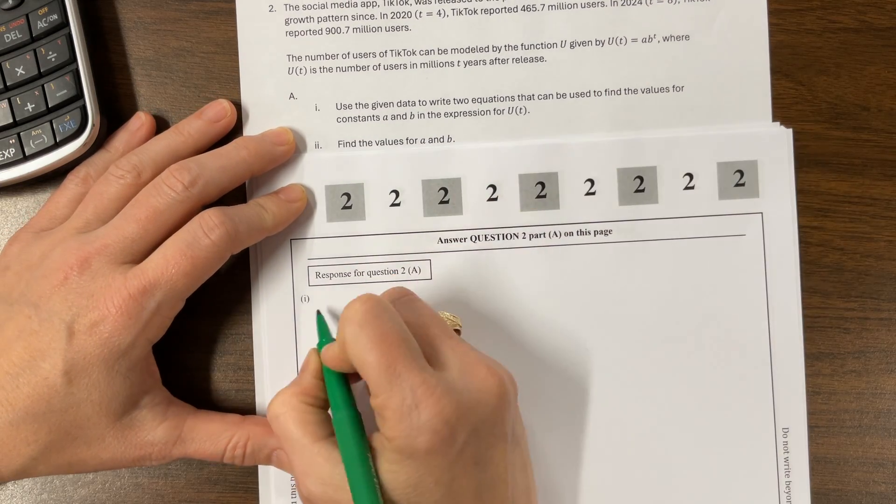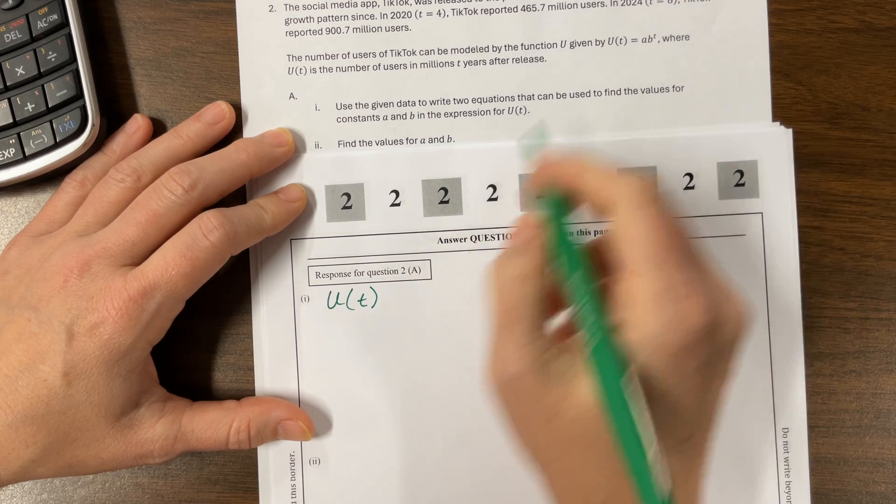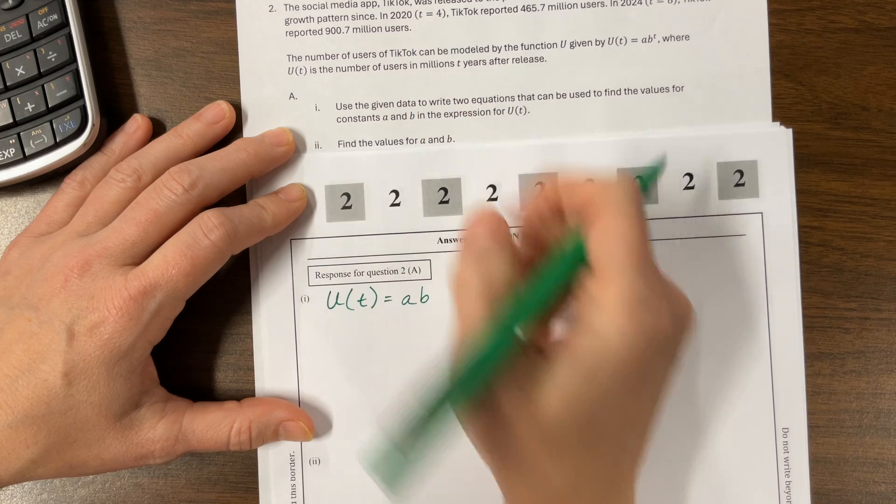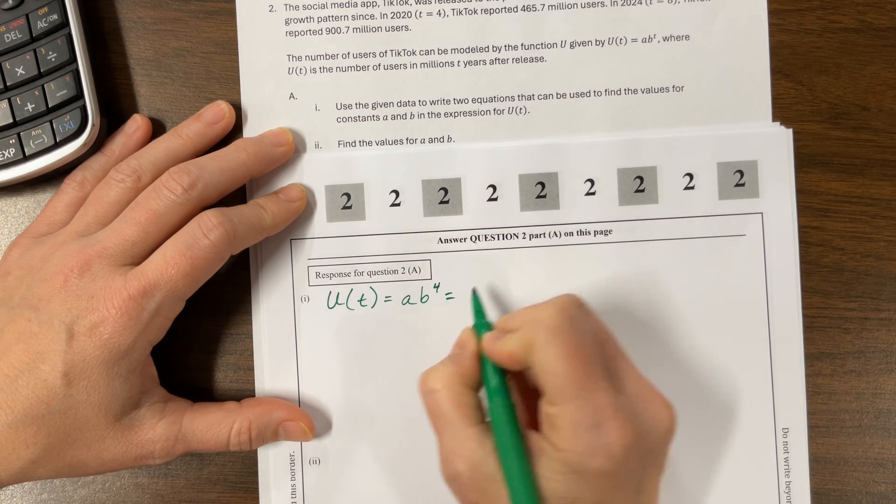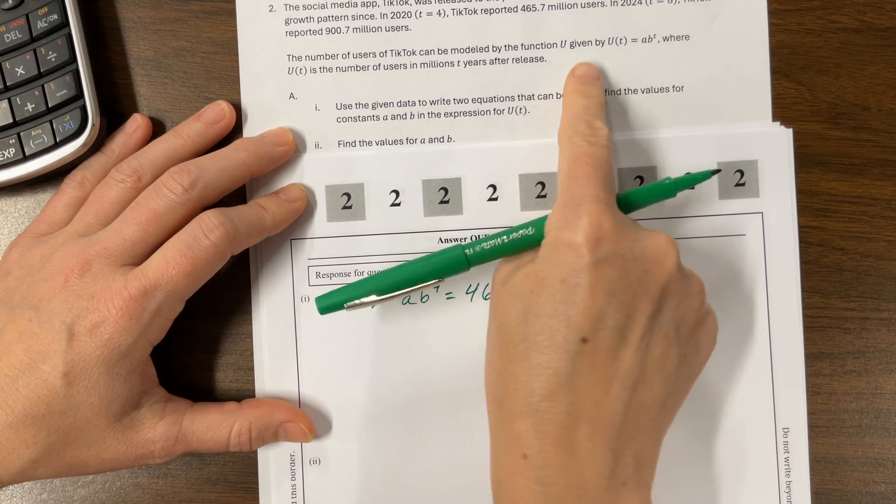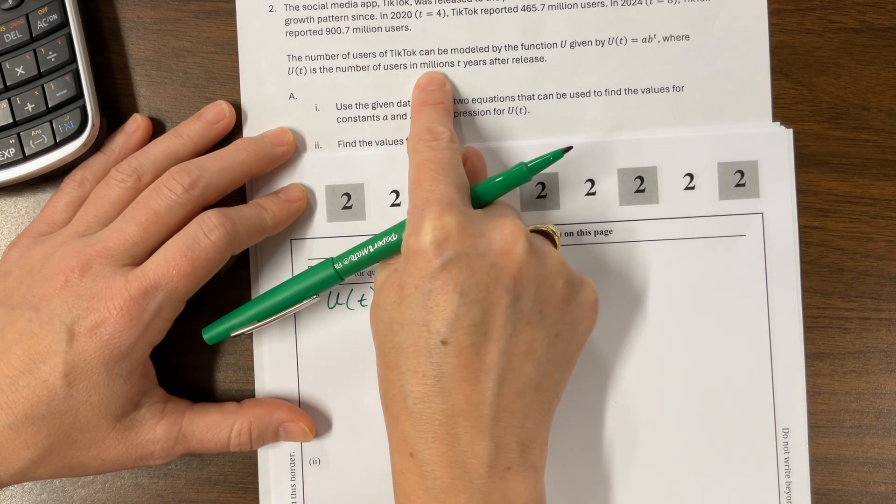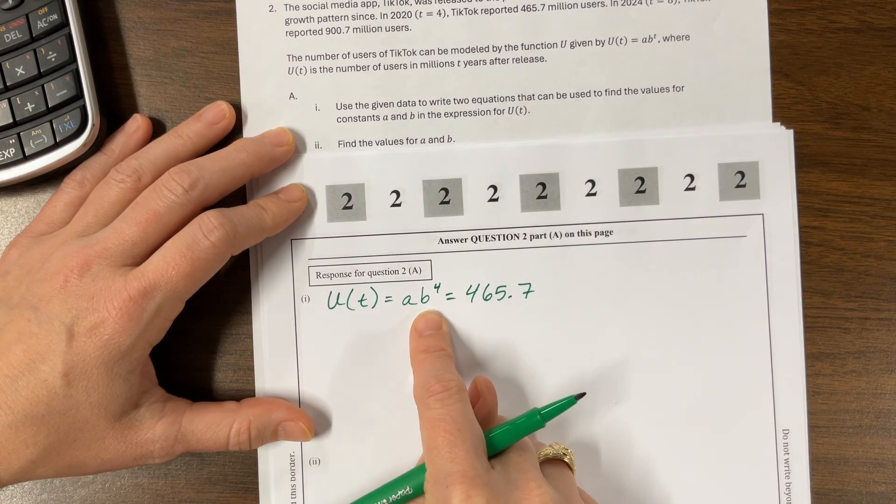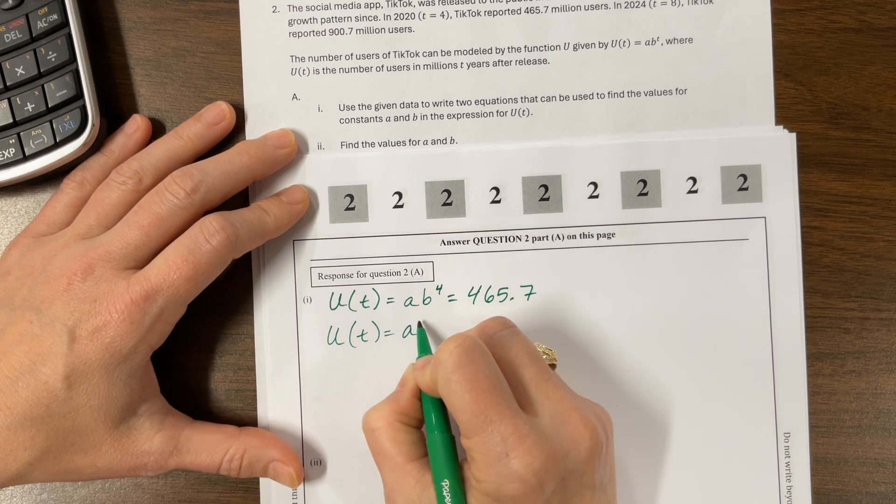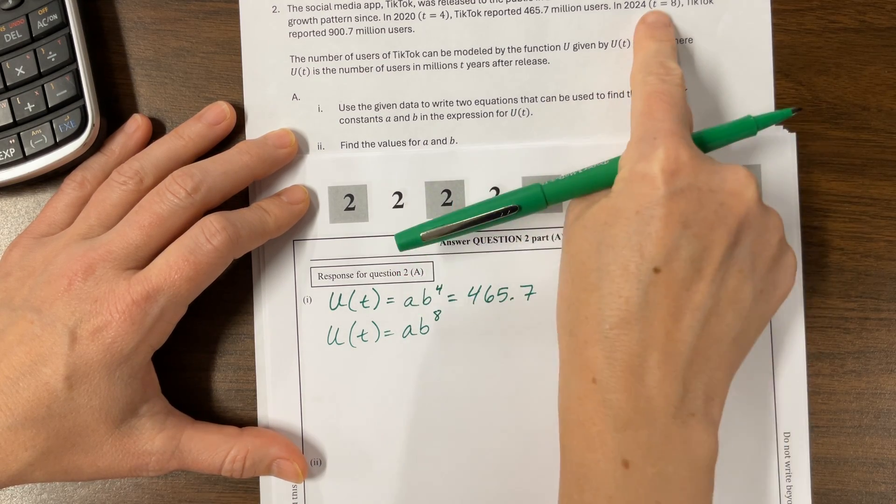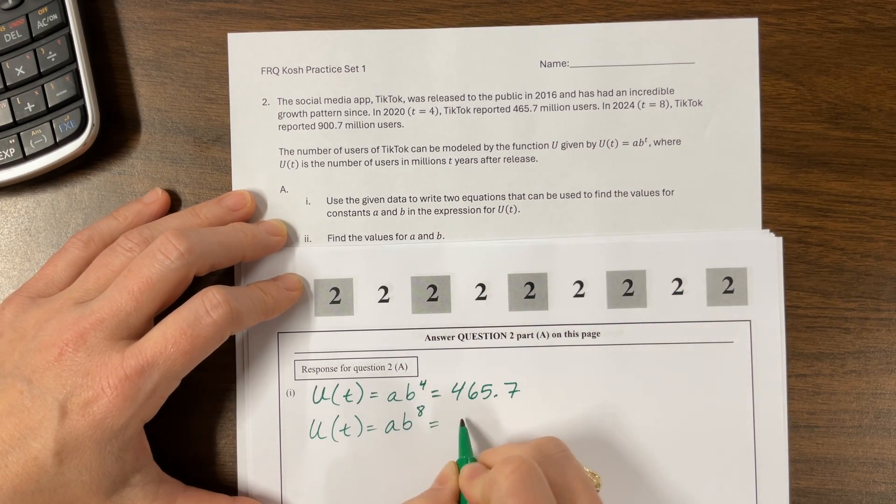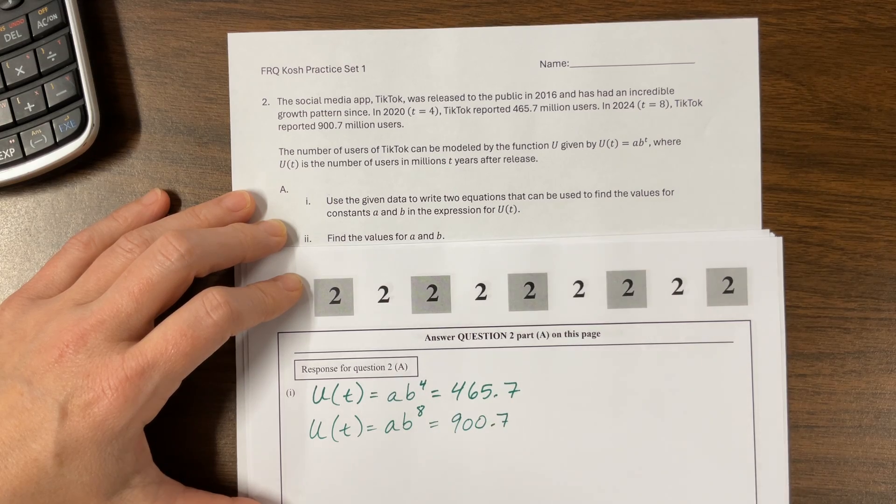They're telling us that it can be modeled with an exponential function where U(T) is the number of users in millions, T years after release. We know that U(T) will equal A times B to the T, but when T equals 4, our value will be 465.7 million.